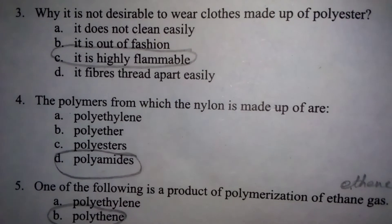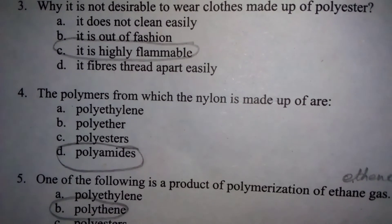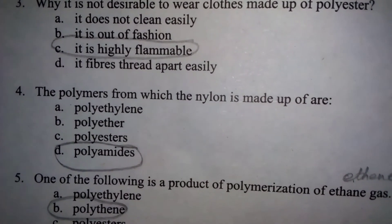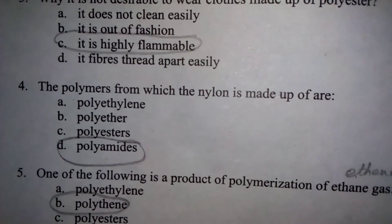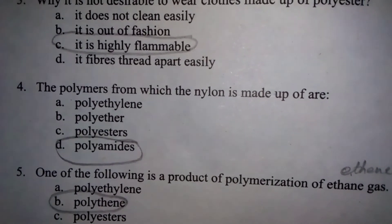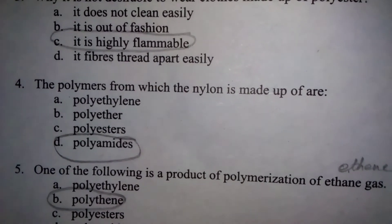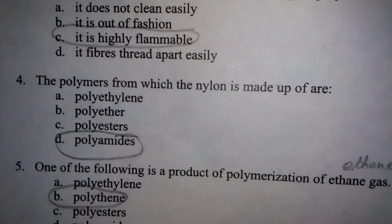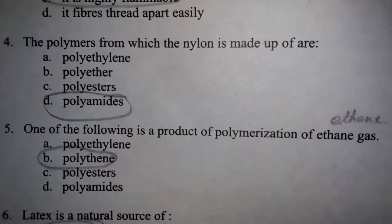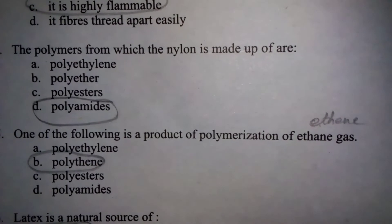The polymers from which nylon is made are polyamides. نیلون کس چیز سے بنایا جاتا ہے؟ Polyamides سے۔